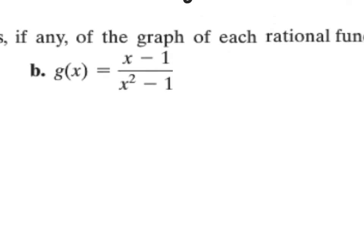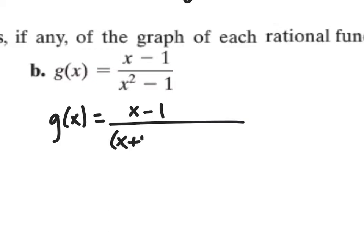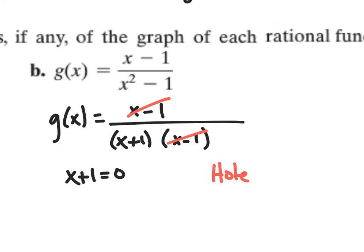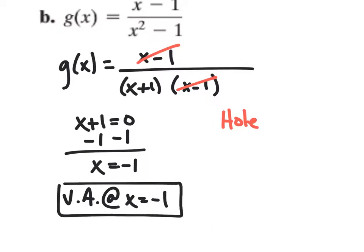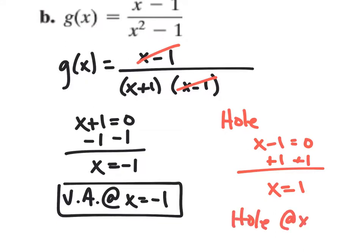Part b is a little different. In g(x), we have x minus one divided by x plus one times x minus one. The x minus one factors divide out, which means we have a hole. Our vertical asymptote comes from x plus one equals zero, so x equals negative one — vertical asymptote at x equals negative one. And for the hole, x minus one equals zero gives x equals positive one, so there's a hole at x equals one.